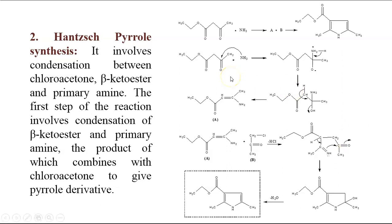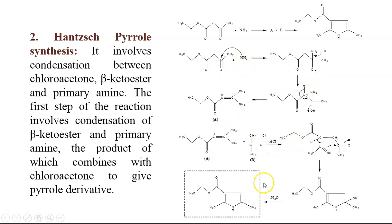Let us see the reaction. We have this beta-keto-ester reacting with the amine, and it will undergo different steps of cyclization leading to the formation of the cyclic structure substituted with an acetyl group.